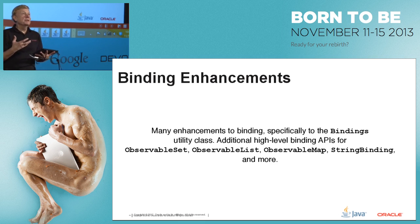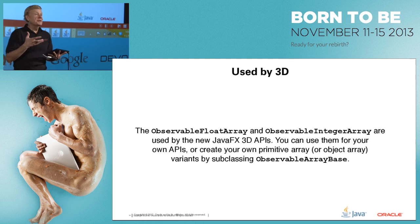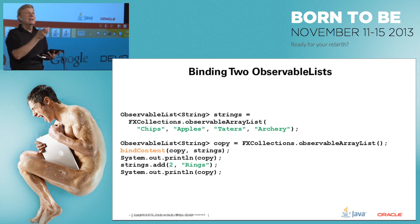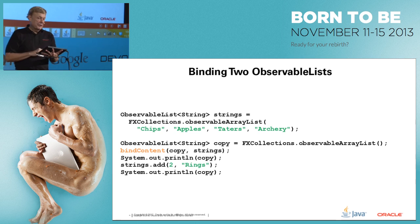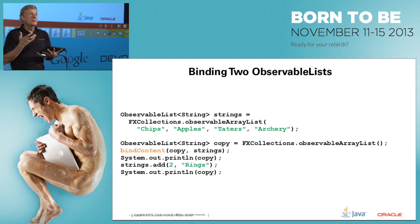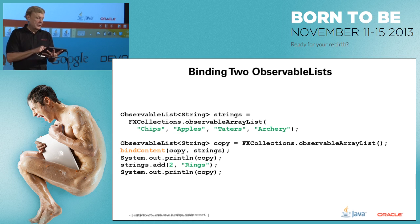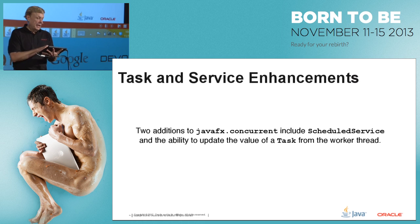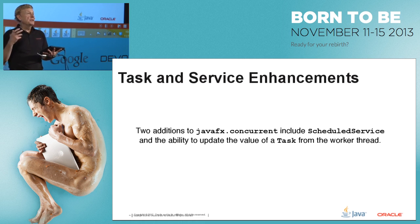There are also binding enhancements. Binding is a powerful feature that keeps the UI in sync with your client-side model. For example, to synchronize two observable lists you can call bindContent on them, and they'll stay in sync. If I have an observable list with four elements, add something to the source list, and print the copy, that item will also appear in the target list.